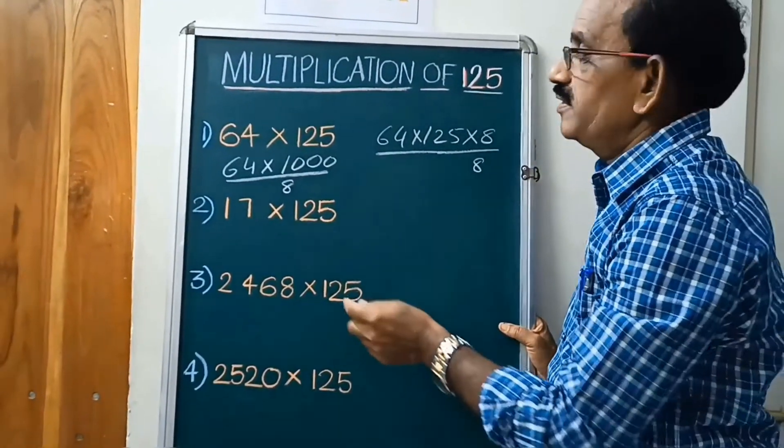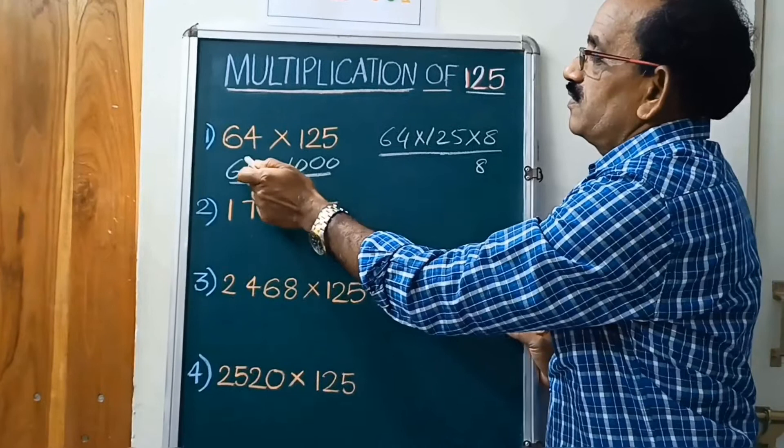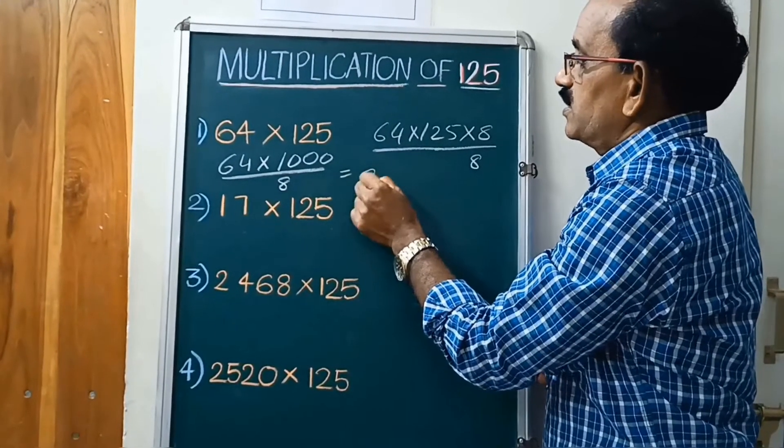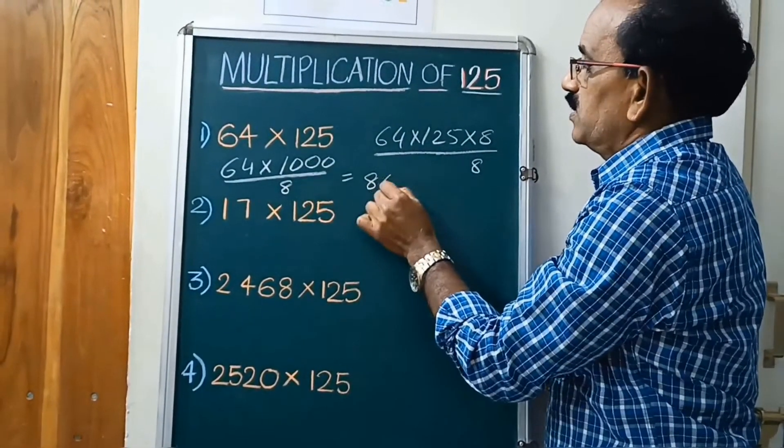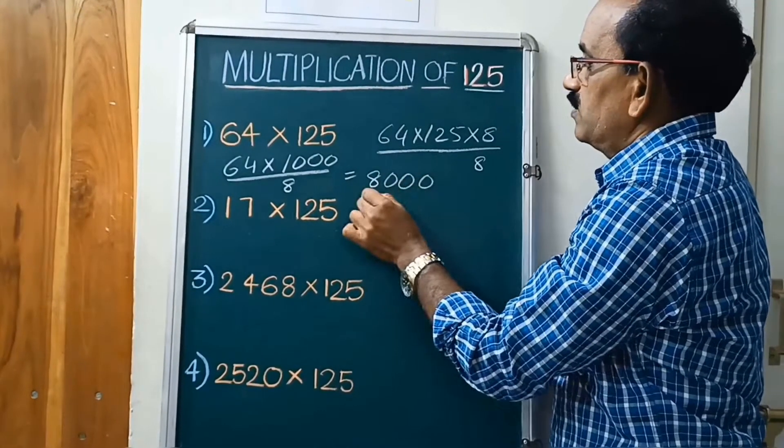First divided by 8. 64 by 8. 8 eights are put in 3 zeros. That is equal to 8000.